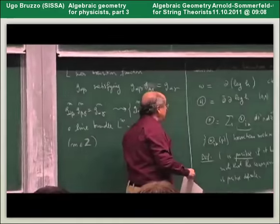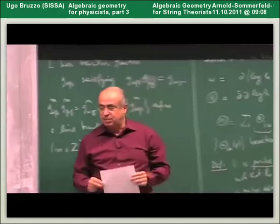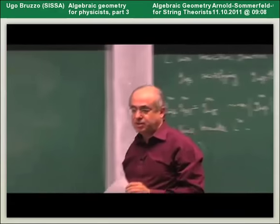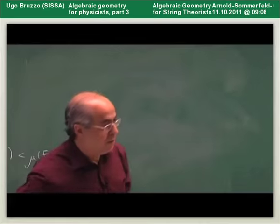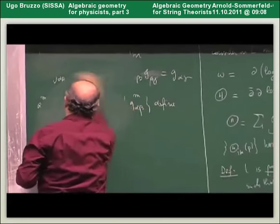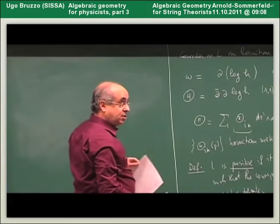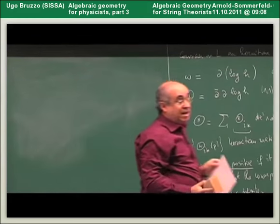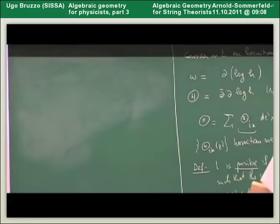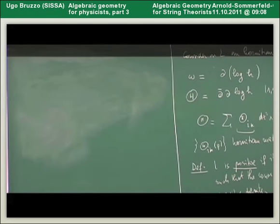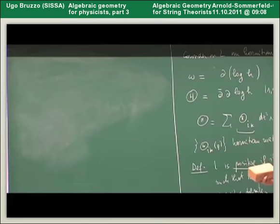I will give an idea of what a moduli space of stable bundles may be, then add a few words about possible compactifications of this moduli space, and spend a few words on what happens in higher dimensions — when X is not a curve but a surface or a projective variety of higher dimension.